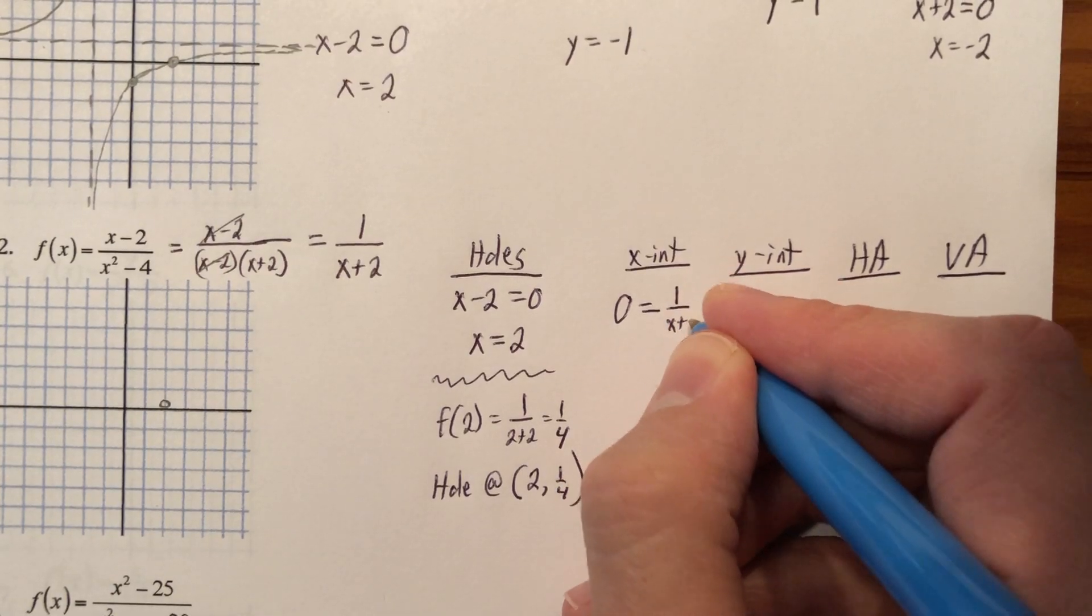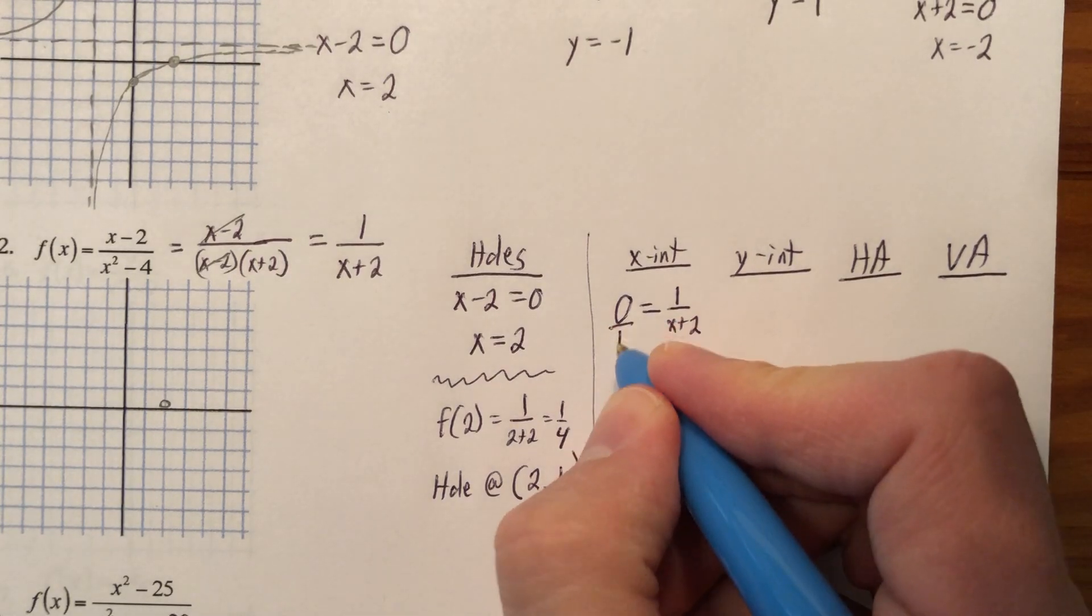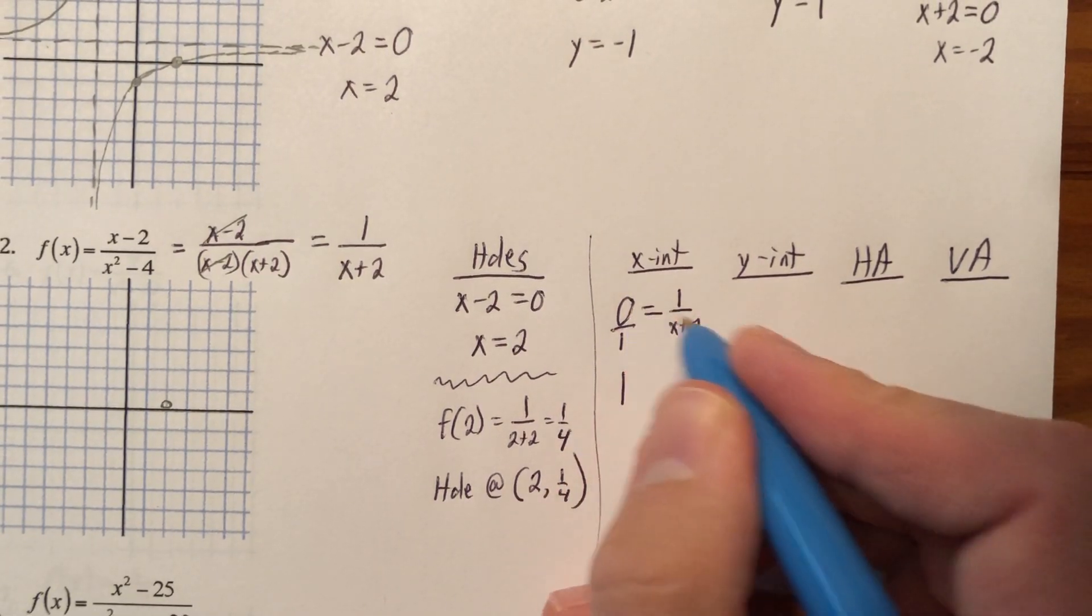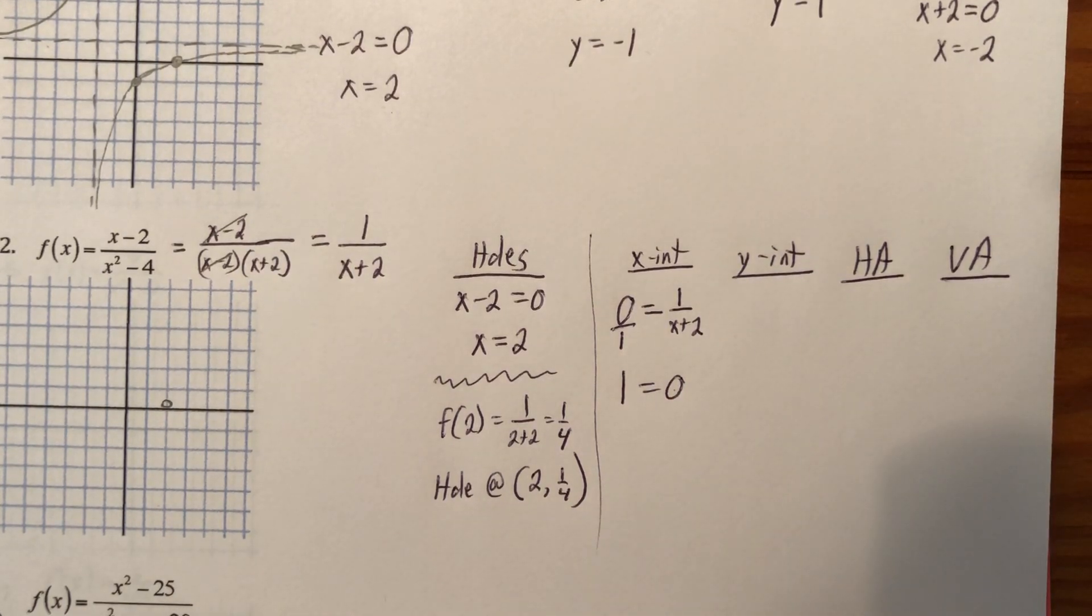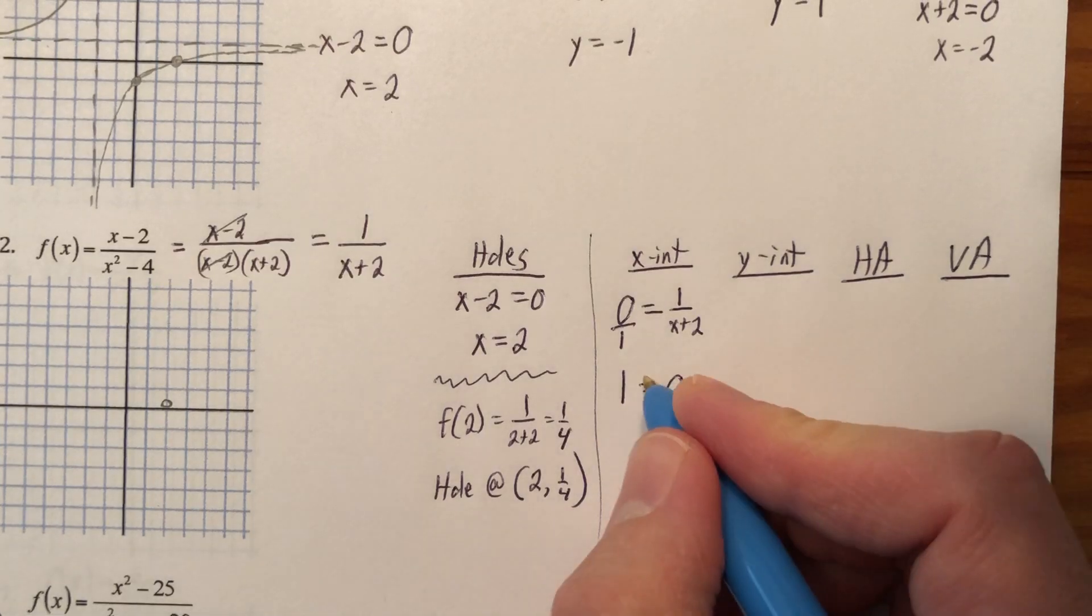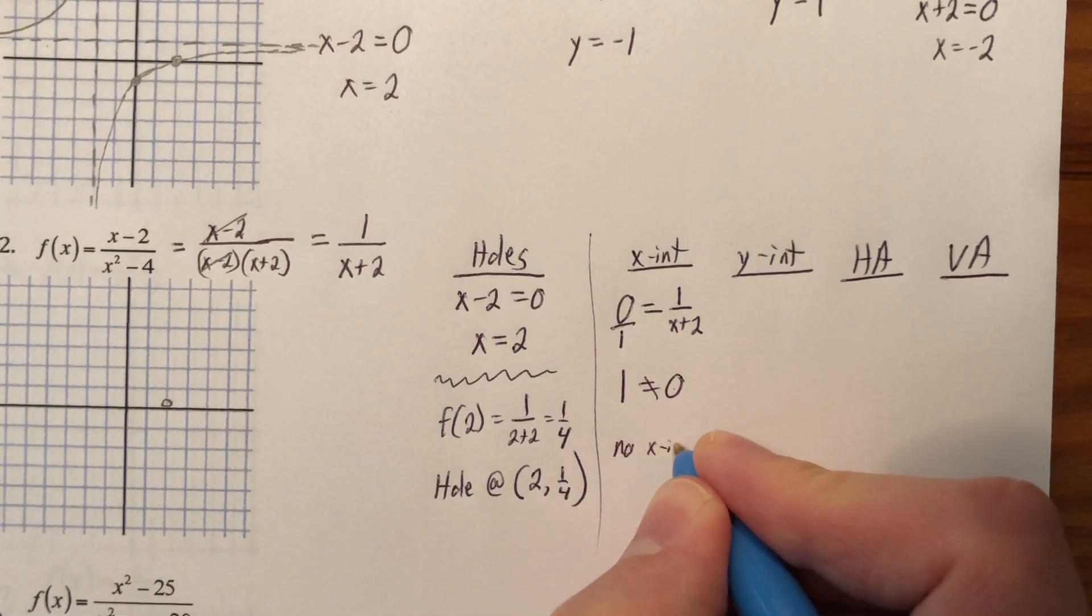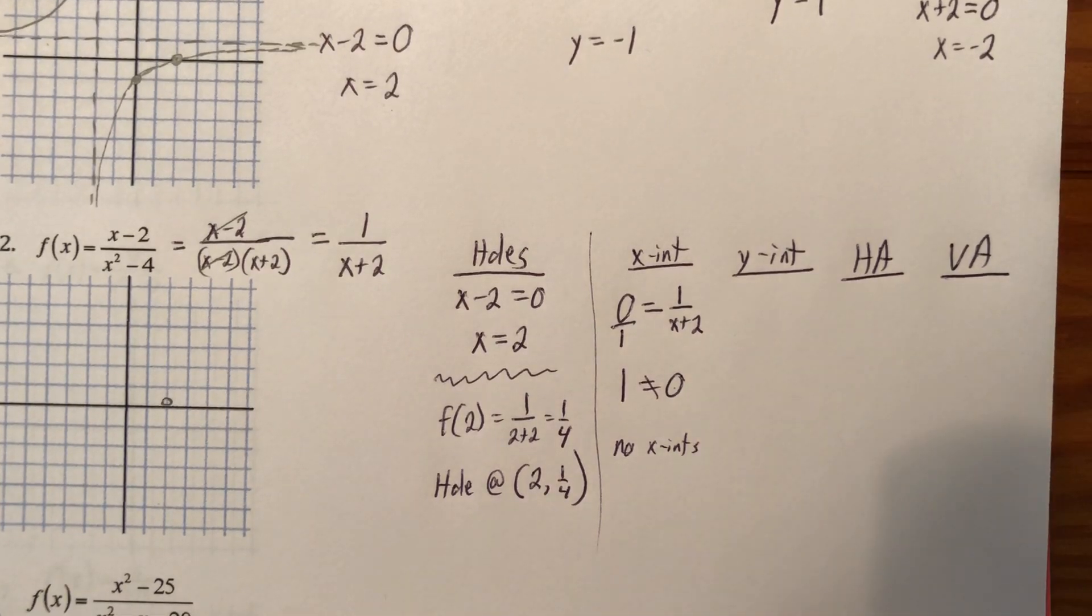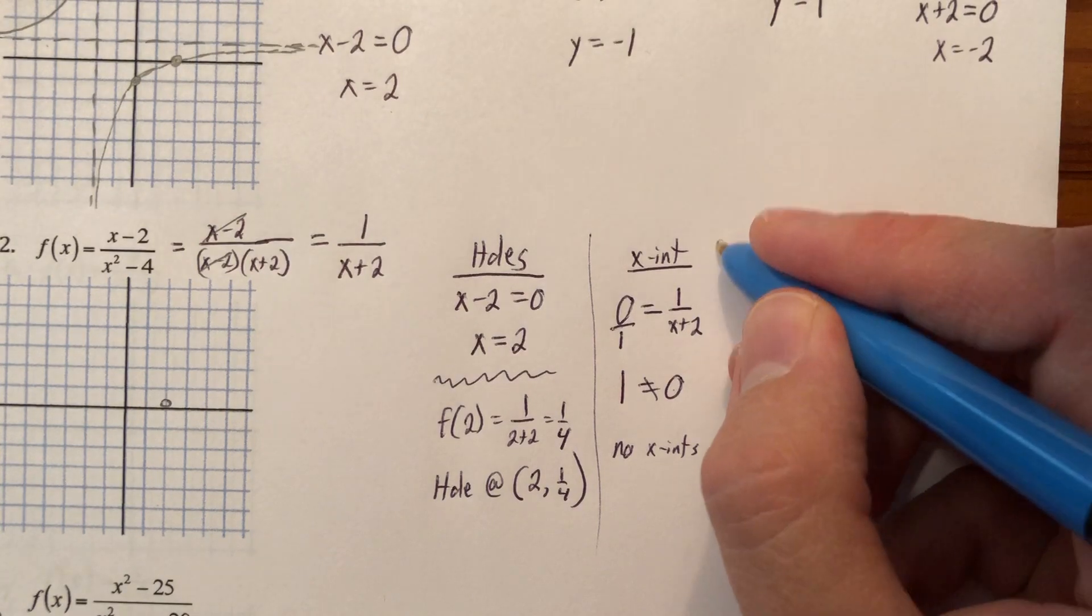1 over x plus 2. And we will cross multiply. So put that over 1. So 1 times 1 is 1. 0 times that is 0. 1 equals 0. That is a false statement. 1 does not equal 0. You lost your x. X is gone. So not true. And so there are no x-intercepts, which actually tells me I'm probably going to have an asymptote because I'm not touching the x-axis.